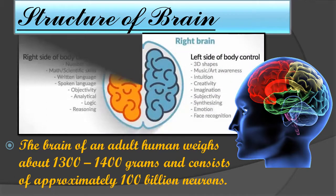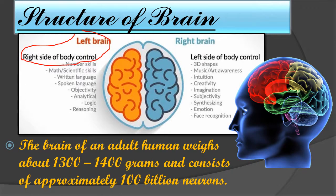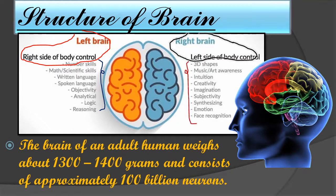The left side of our brain controls the right side of our body and the right side of the brain controls the left side. Functions of the left brain include number skills, mathematics, scientific skills, written and spoken language, objectivity, analytical and logical reasoning. Functions of the right brain include 3D shapes, music, art, awareness, intuition, creativity, and imagination.